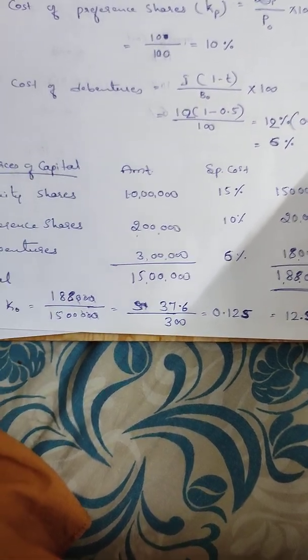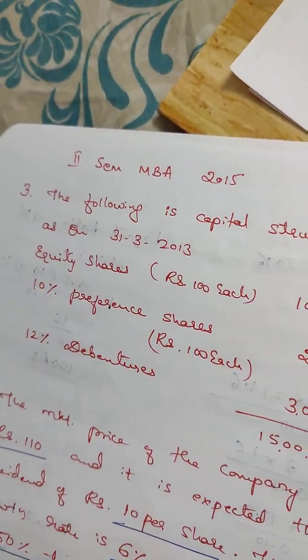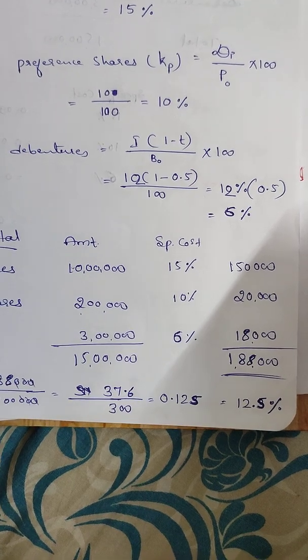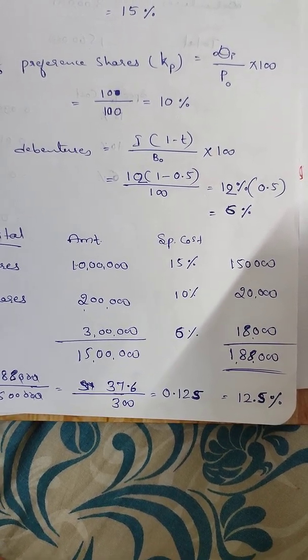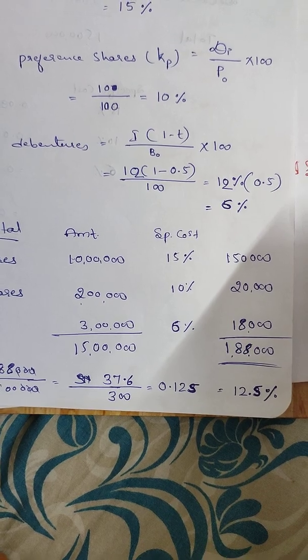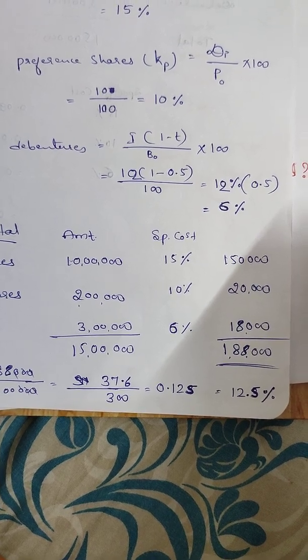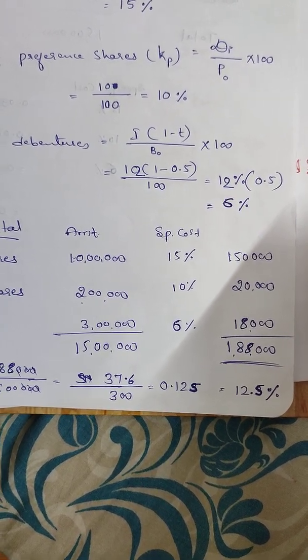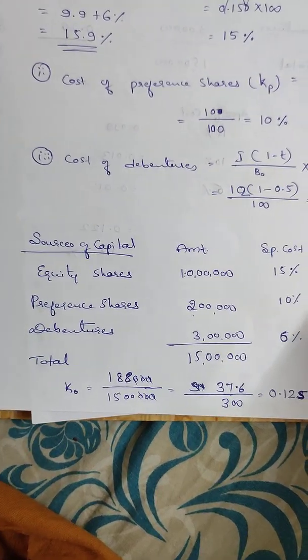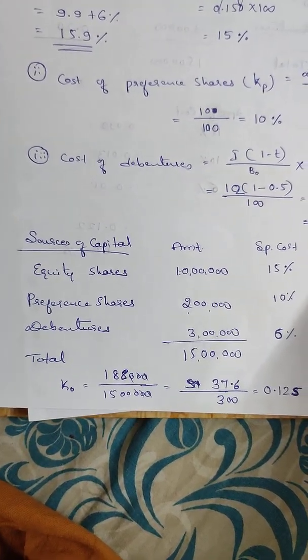For cost of debentures: interest rate is 12%, so 12 multiplied by (1 minus 0.5) divided by 100, which equals 6%. The cost of debentures after tax is 6%.